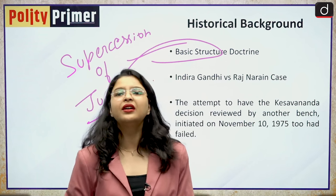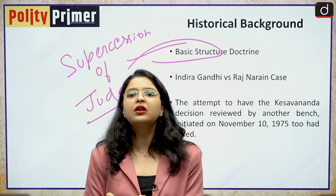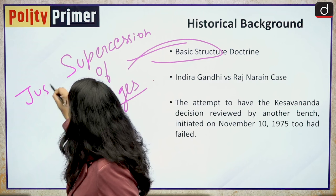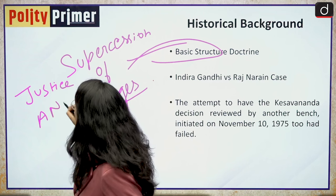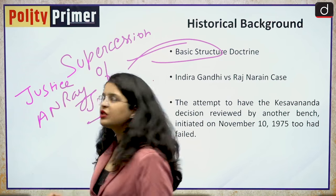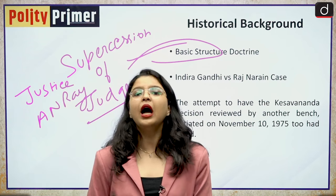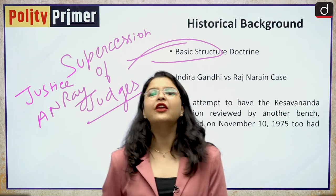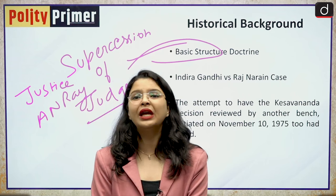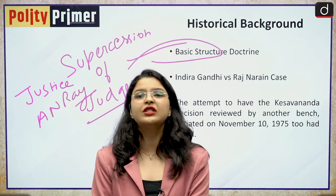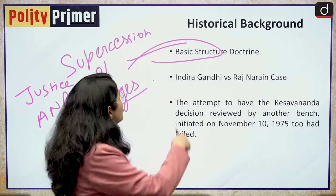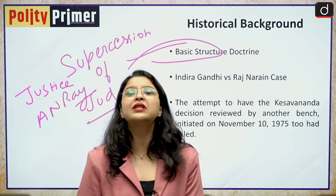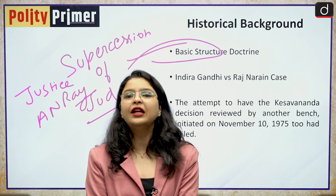After this judgment, three senior most judges of the Supreme Court were superseded by Justice A.N. Ray, and he was made the Chief Justice of India. Previously, the appointment of Chief Justice of India used to happen on seniority. But this was the very first time that the convention on seniority was broken and Justice A.N. Ray was made the Chief Justice of India, because the government at that point of time was not in favour of the basic structure doctrine — they considered that they had absolute power to amend any part of the Indian constitution.